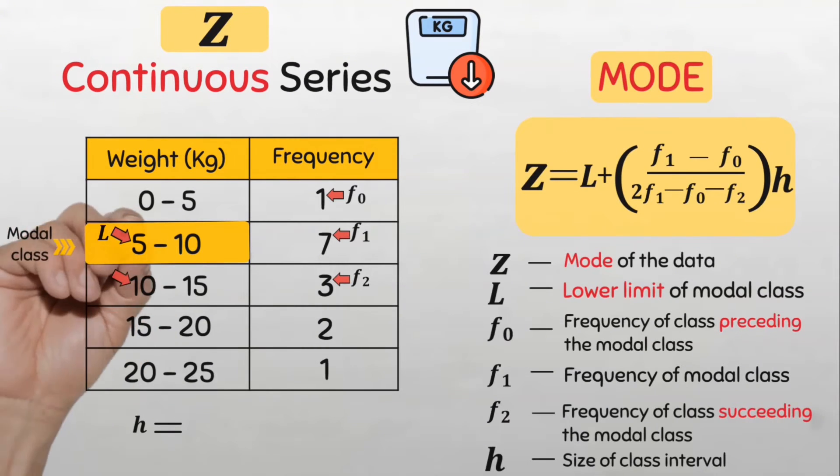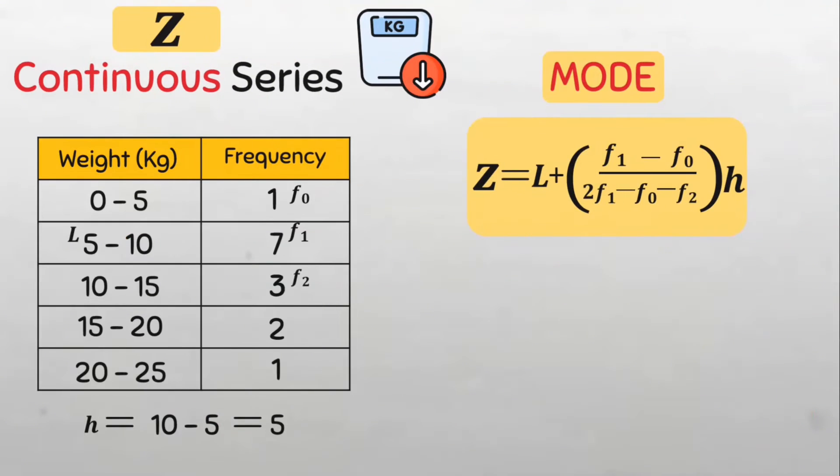Now let's plug in all these values into the formula. So Z equals L which is 5 plus open parenthesis f sub 1 which is 7 minus f sub 0 which is 1 divided by 2 times f sub 1 which is 7 minus f sub 0 which is 1 minus f sub 2 which is 3.